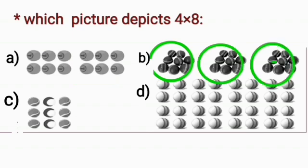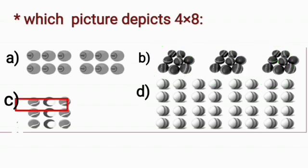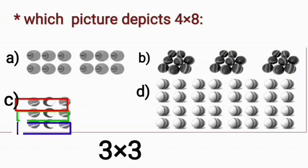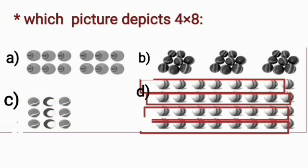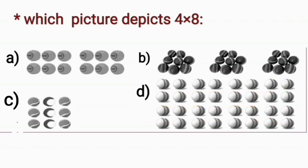In the B option, there are 3 groups of 8 balls. That again, it's wrong. In the C part, here we have 3 groups of 3 balls. This is again wrong. Now, option D. We will see there are 4 groups of 8 balls. So, this is the right answer. Option D.